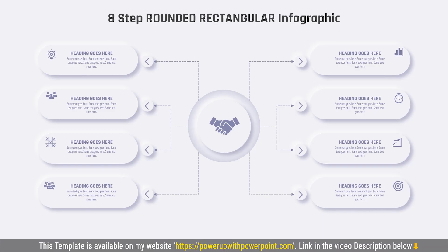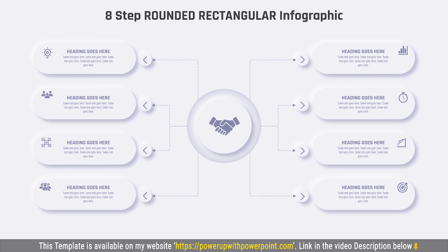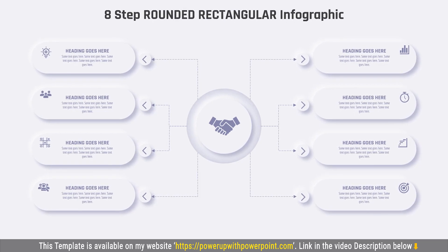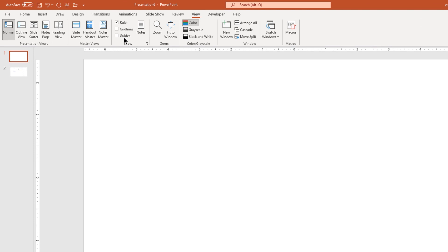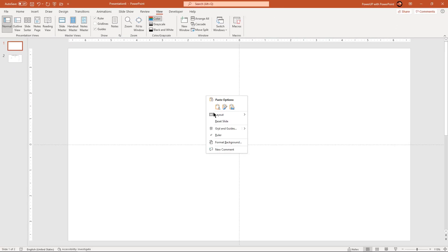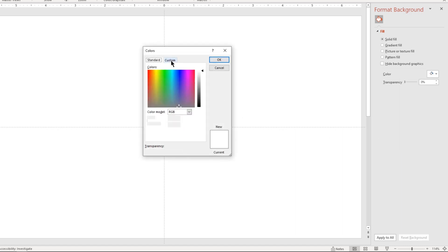Hello all and welcome back. Today we are going to create this beautiful infographic using PowerPoint. So let's get started. Let's first enable the guides and then format the background with any light color. I advise to have a blue shade in this light color.